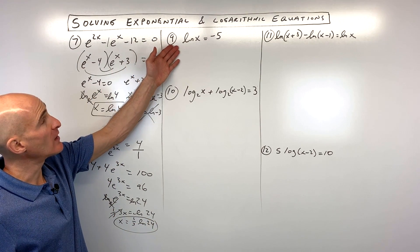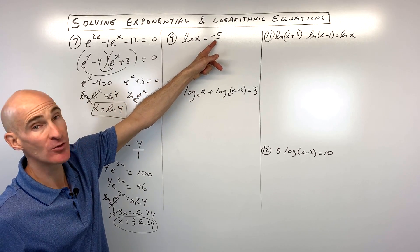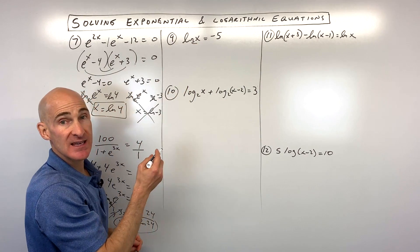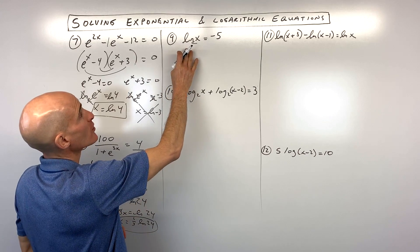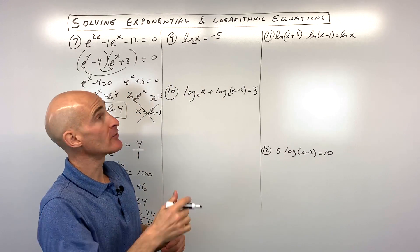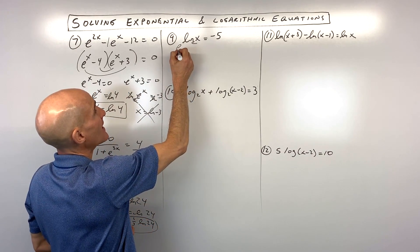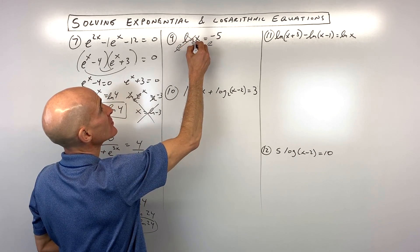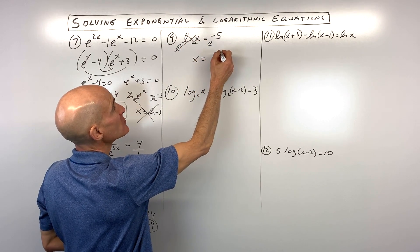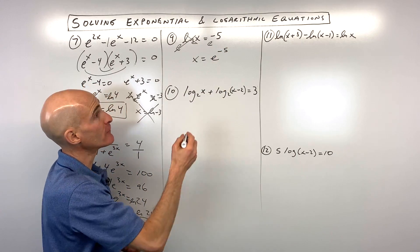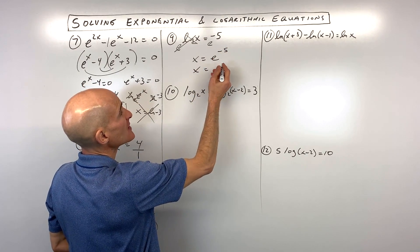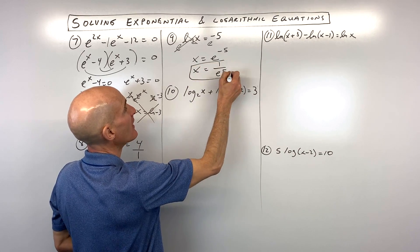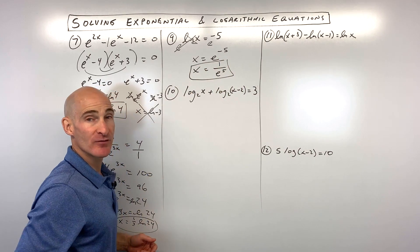For number 9, natural log of x equals negative 5. This is base e. Do the inverse of natural log — exponentiate both sides using base e. These are inverses, so x equals e to the negative 5. Because it's a negative exponent, we can take the reciprocal and write this as 1 over e to the positive 5.